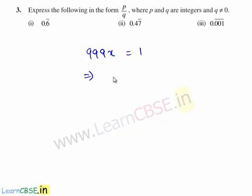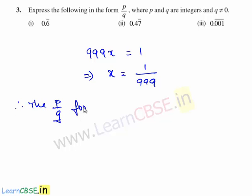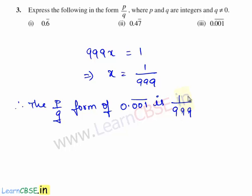We are left with 1, so 999x is equal to 1, which implies x is equal to 1 upon 999. Therefore the p by q form of the given decimal expansion 0.001 bar is 1 by 999, where 1 and 999 are integers and the denominator is not equal to zero.